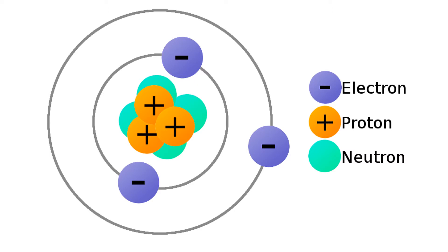Neutrons and protons make up the nuclei, or the centers of the atoms, and the electrons occur in a cloud around the nuclei, orbiting the nuclei like planets. There are many types of atoms called elements. Each element has a unique number of protons — its atomic number.